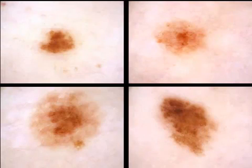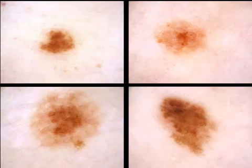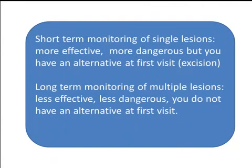Why is this? Consider a spectrum of nevi from the same patient: for short-term monitoring you would choose only a single, most atypical lesion, whereas for long-term monitoring you would probably choose all four lesions. When you select a lesion for short-term monitoring, the chance that the selected lesion is already a melanoma is higher because you select more atypical lesions. This does not mean the chances are higher that the selected lesion will develop into a melanoma.